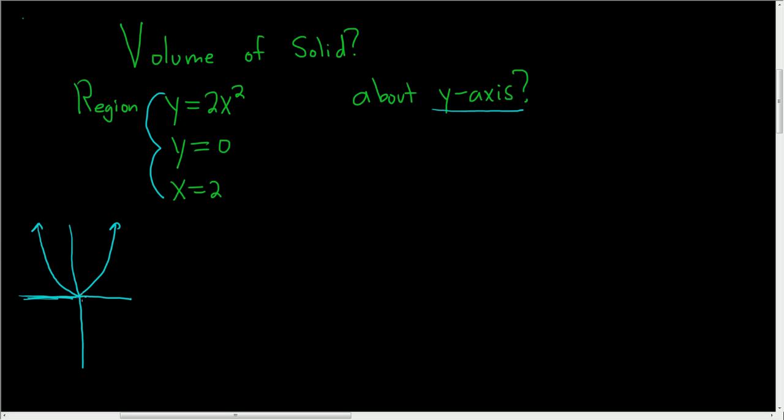y equals 0 is this horizontal line, it's basically the x-axis. And x equals 2 is a vertical line at 2. So here's 2 and then here's x equals 2. So it looks like we're dealing with this region here.